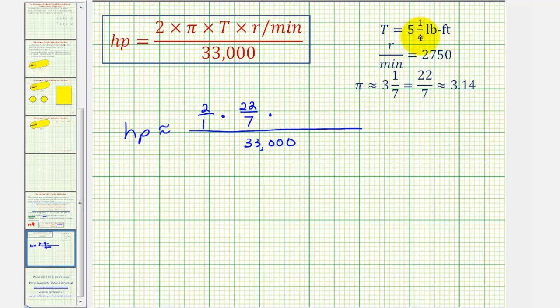Which is five and one-fourth pound-feet. But let's write this as an improper fraction, so the denominator is going to be four. The numerator would be four times five plus one, which is 21. So five and one-fourth is equal to 21-fourths. And then finally times the revolutions per minute, which we know is 2750, which I'll write over one.